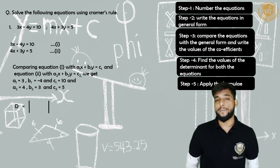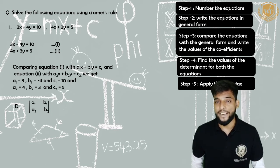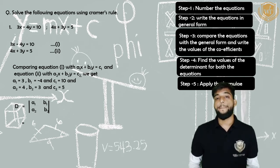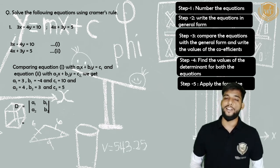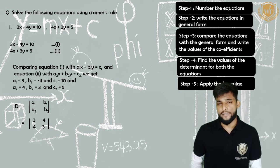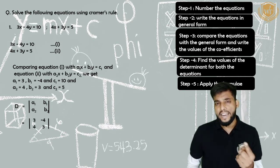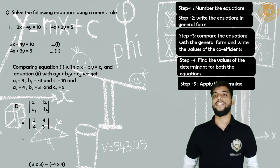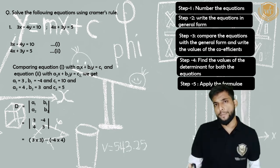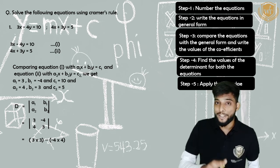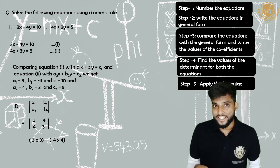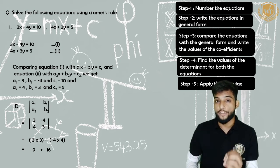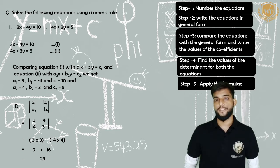Step four: finding the value of determinant D. The elements are A1, B1 in the first row and A2, B2 in the second row — that is 3, minus 4 and 4, 3. We calculate: 3 into 3 minus 4 into minus 4. Three threes are 9; 4 into minus 4 is minus 16, but with the outer minus sign it becomes plus 16. So 9 plus 16 equals 25. The value of determinant D is 25.